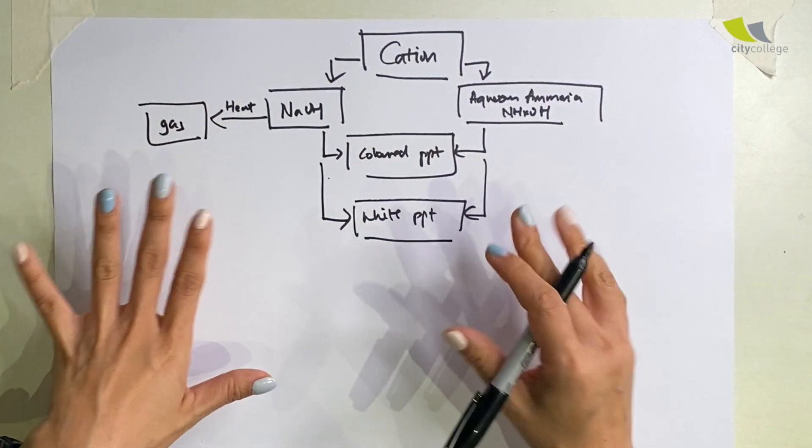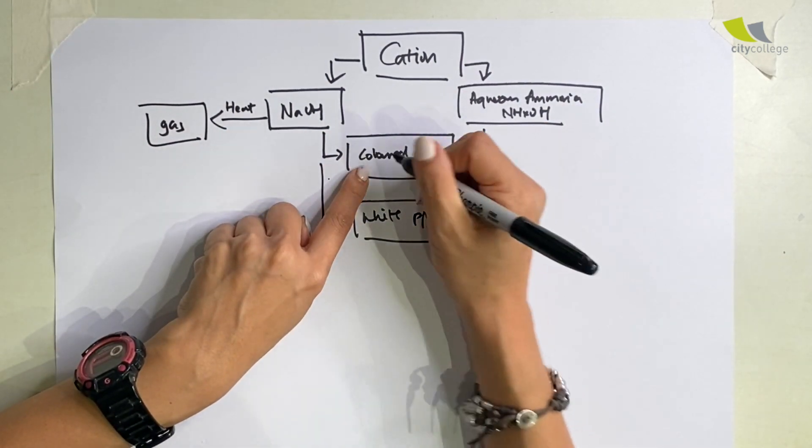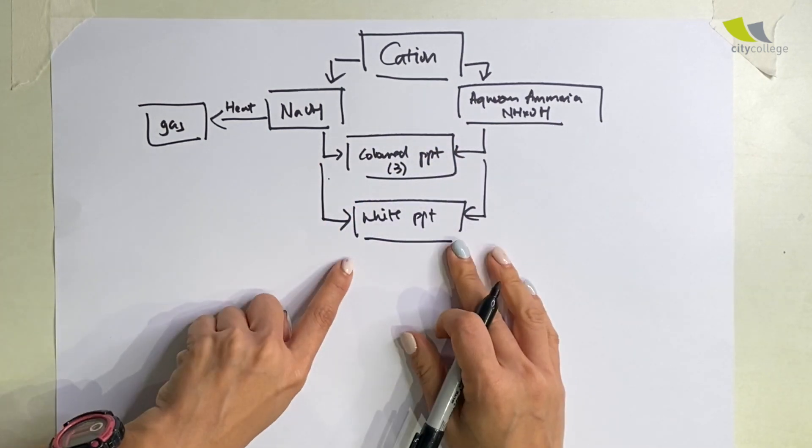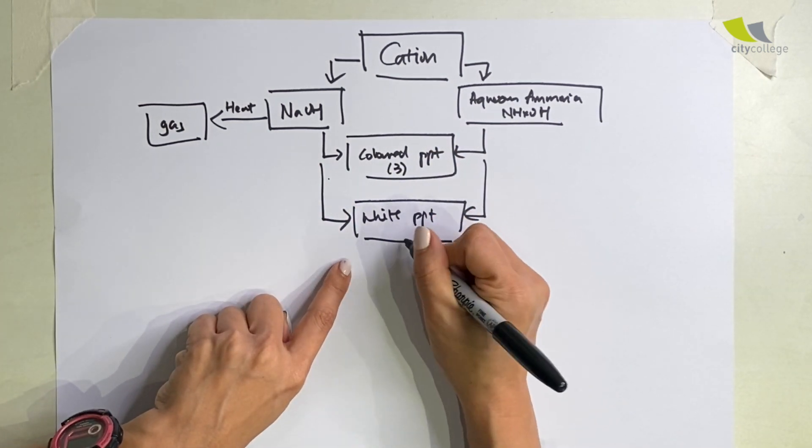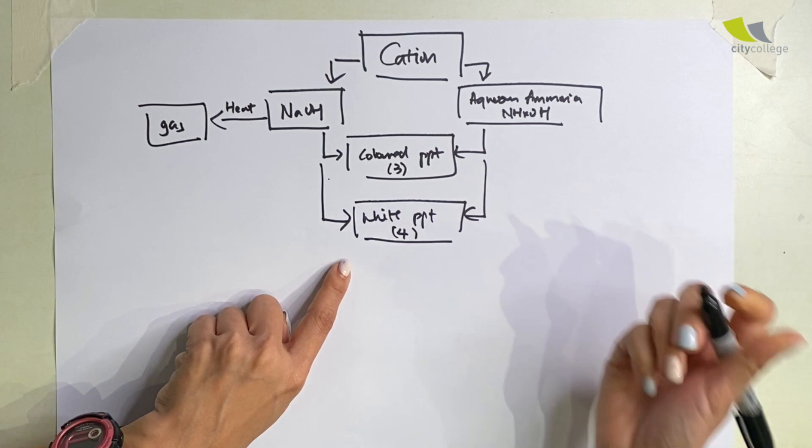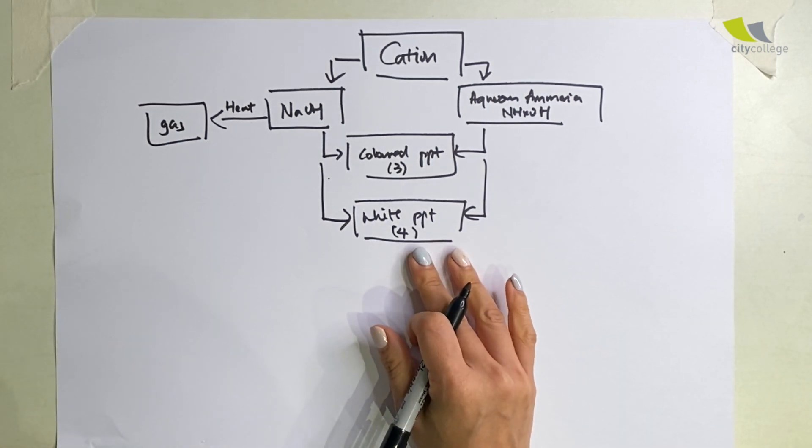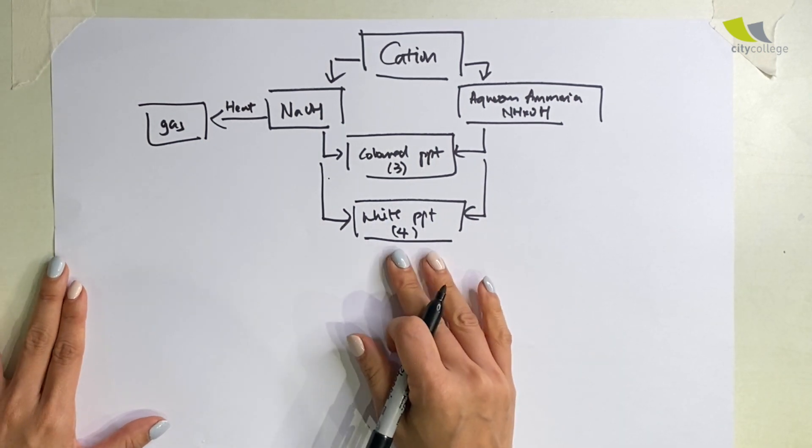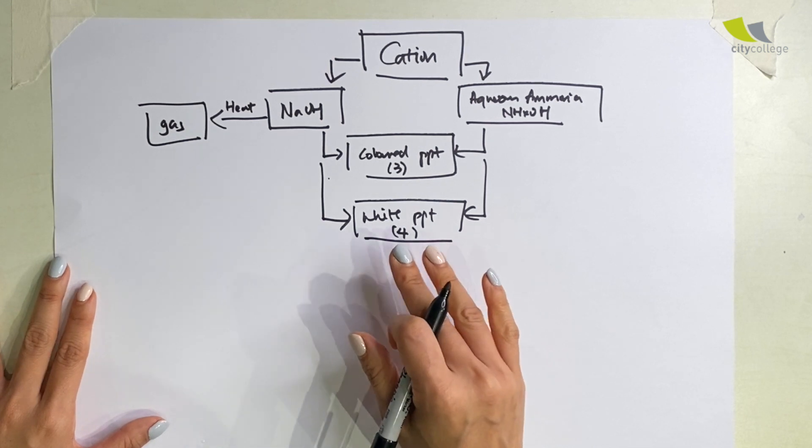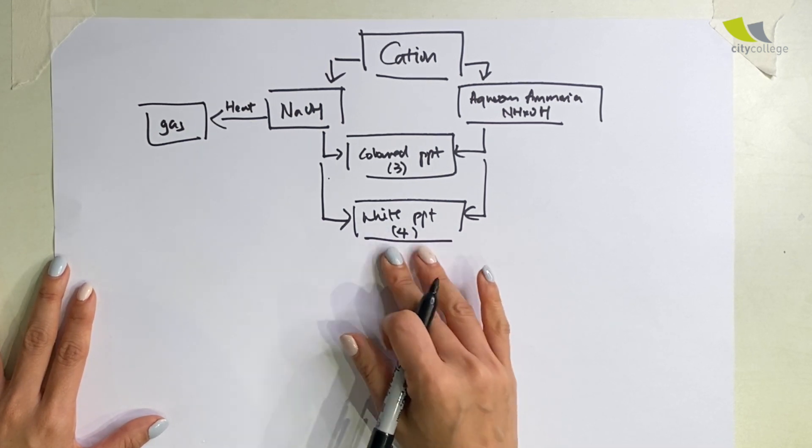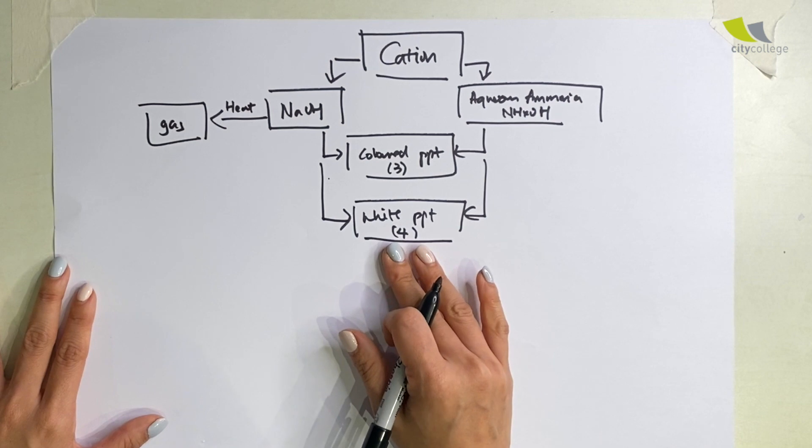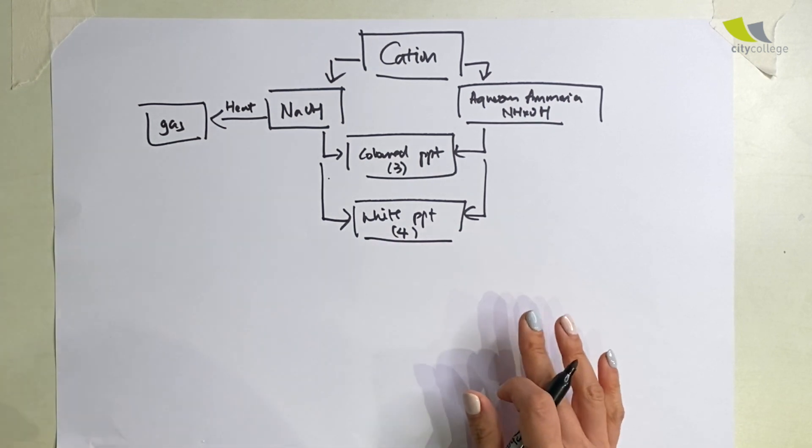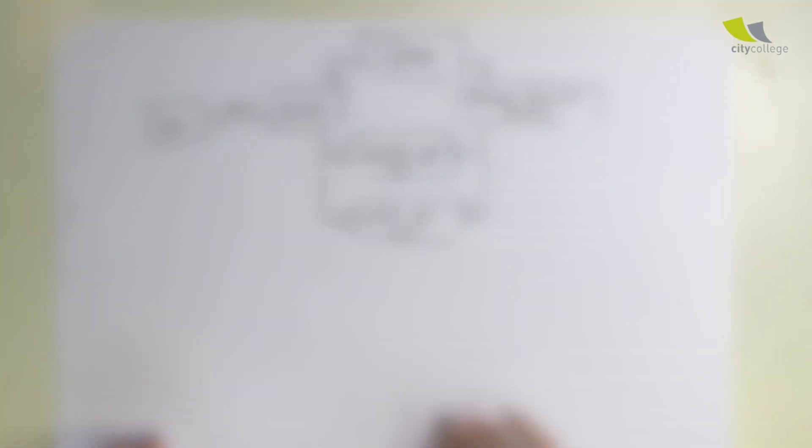For the color precipitate I have three, for the white precipitate I have up to four. If you're in the combined science category there will be three white precipitates. If you're under the pure chemistry category, then you will have four precipitates. Today I'm going to cover gas and the color precipitate.